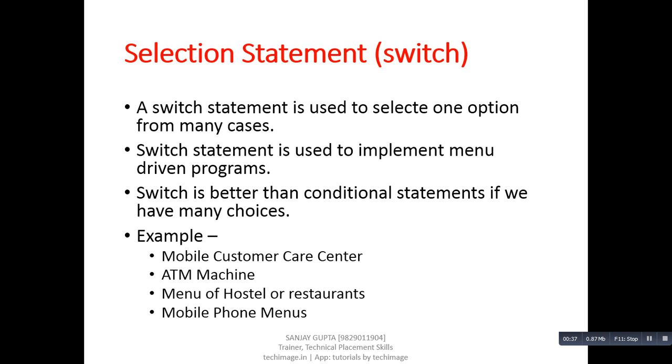There are certain examples which can be implemented with the help of switch statements. First is mobile customer care center, second is ATM machine, third is menu of hostel or restaurant, and fourth is mobile phone menus. In all four examples, you might have used some menus, and if you want to perform a particular operation, you have to select an option from that menu. So if we implement this type of scenario in C programming, switch statements can be used for this purpose.